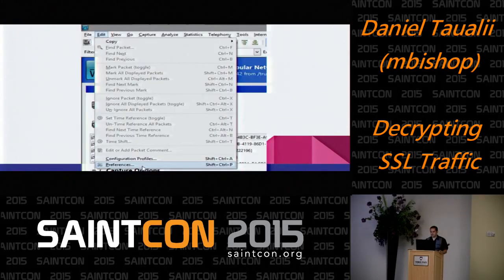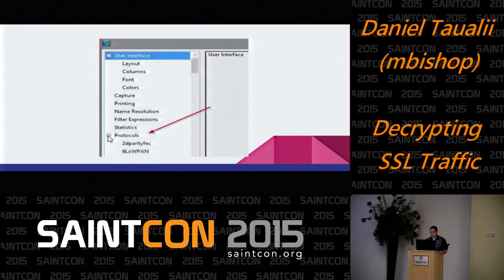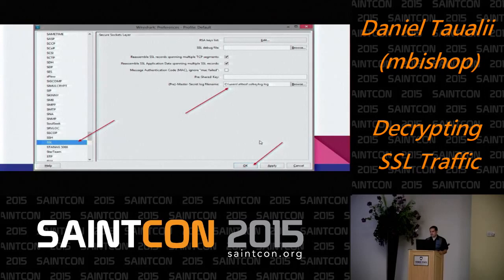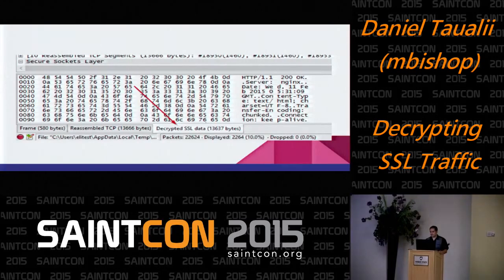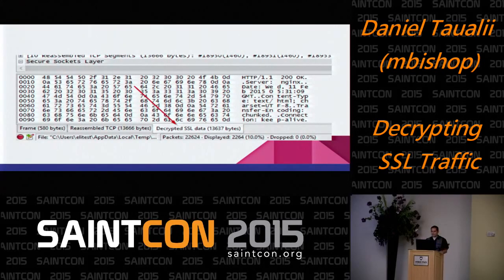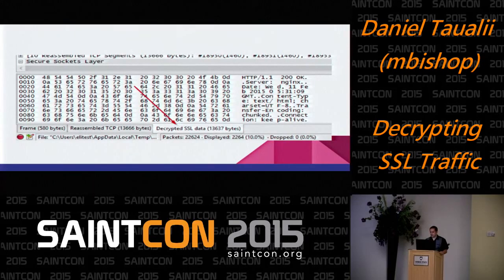In Wireshark, you go to Edit > Preferences and you go into the Protocol section, then SSL. That's where you browse to the file that was dumped. If it's not dumping things, then you don't have anything to put here. After you do that, you can reopen the PCAP, and you'll see an extra tab that wasn't there before called 'Decrypted SSL Data.' You can then see the data that goes back and forth.